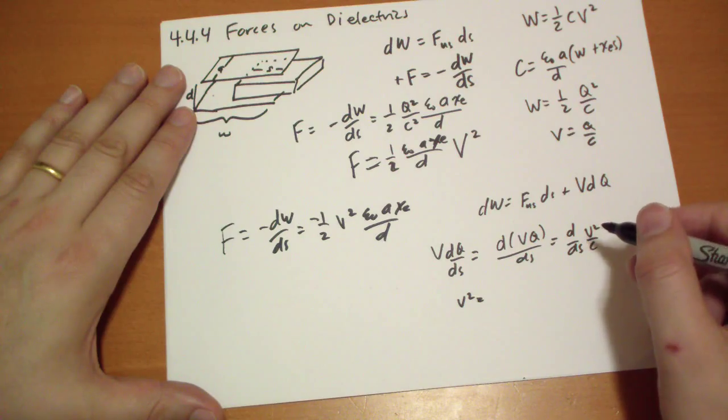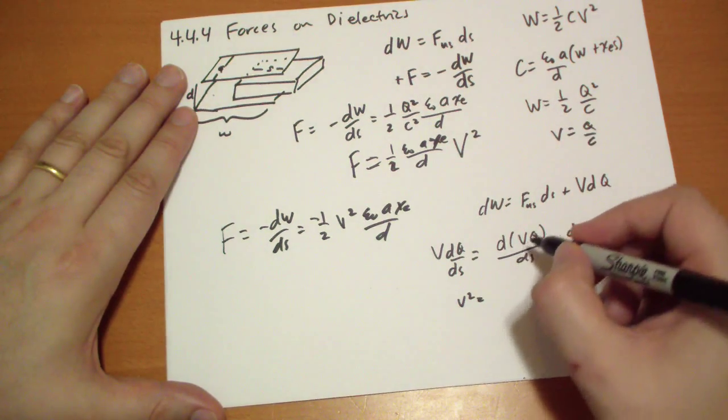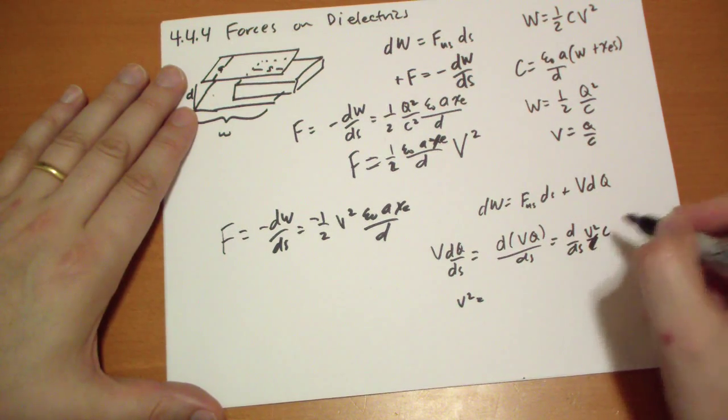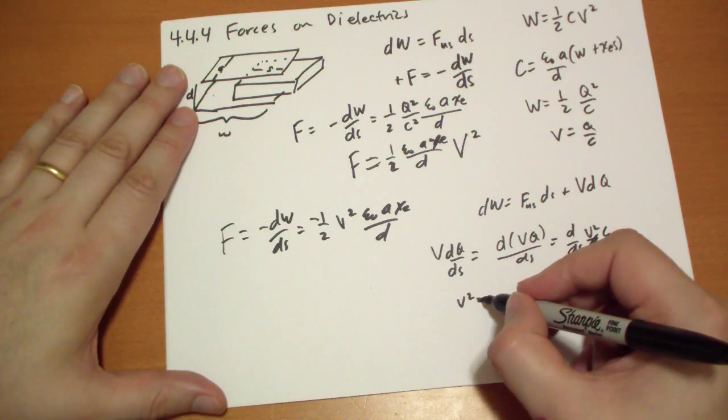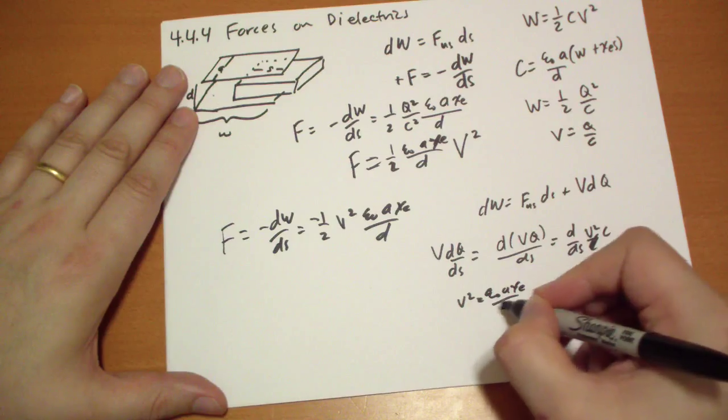Yeah, Q equals VC. Q is VC. This is V squared C. So V squared times the derivative of that, which is epsilon naught A chi E over D. So this is the work the battery did to maintain the consistent potential.